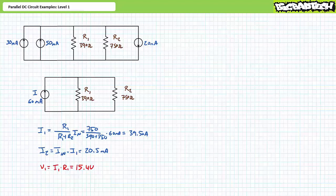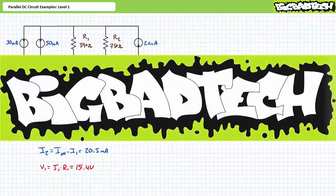That's it. In conclusion, this lecture examined several illustrated examples of parallel DC circuit analysis. Remember to review these concepts as often as needed to really drive them home — imagine how well lab will go if you know what you're doing. Thank you very much for your attention and interest; we'll see you during the next lecture. Remember to tell your lab partner about this resource and check out the Big Bad Tech channel for additional resources and updates.